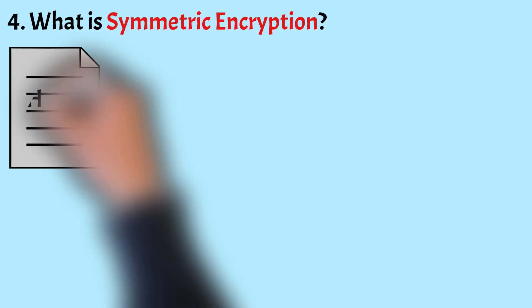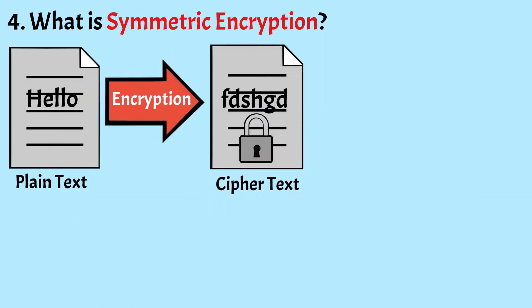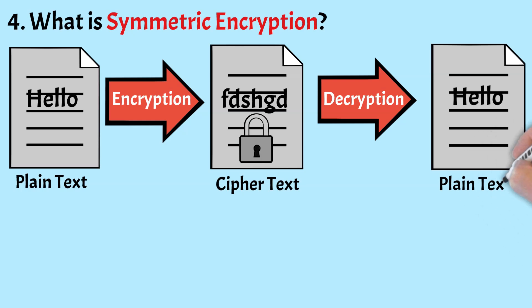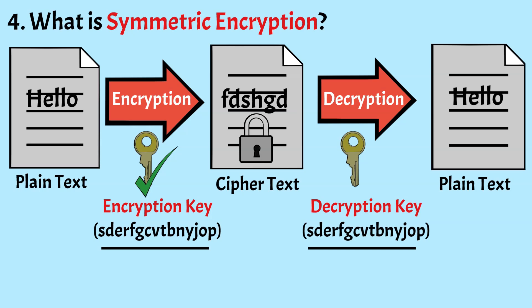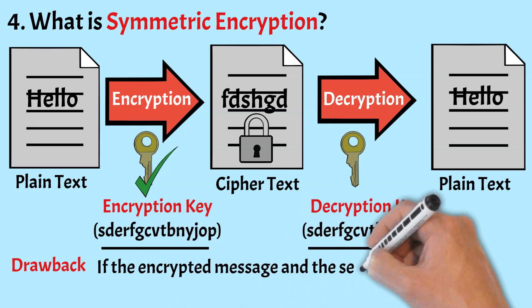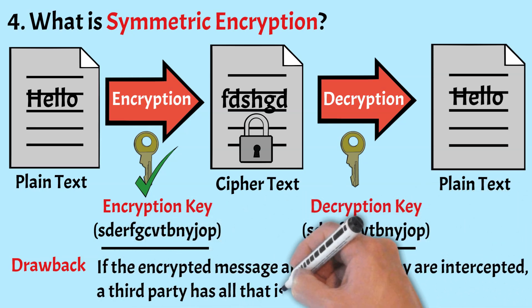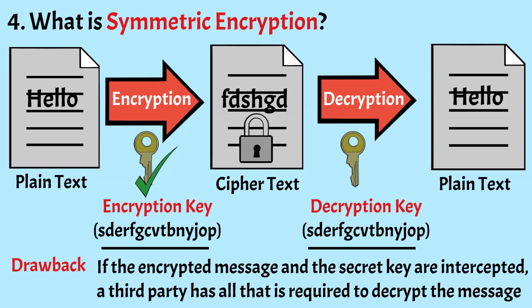What is symmetric encryption? Symmetric encryption is the method that uses the same cryptographic key for both the process of encryption and decryption. It is a very simple method. The message is encrypted with a secret key, and then both the encrypted message and the secret key are sent to the recipient. This is the major drawback of this method — if the encrypted message and the secret key are intercepted, a third party has all that is required to decrypt the message.